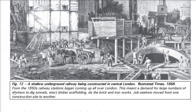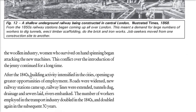This picture shows a shallow underground railway being constructed in central London. By the 1840s, building activity was going on: roads were widened, new railway stations came up, railway lines laid, tunnels dug, drainage and sewers laid, rivers embanked — that is how people got jobs. The number of workers employed in just the transport industry doubled in the 1840s, and again doubled in the next 30 years.